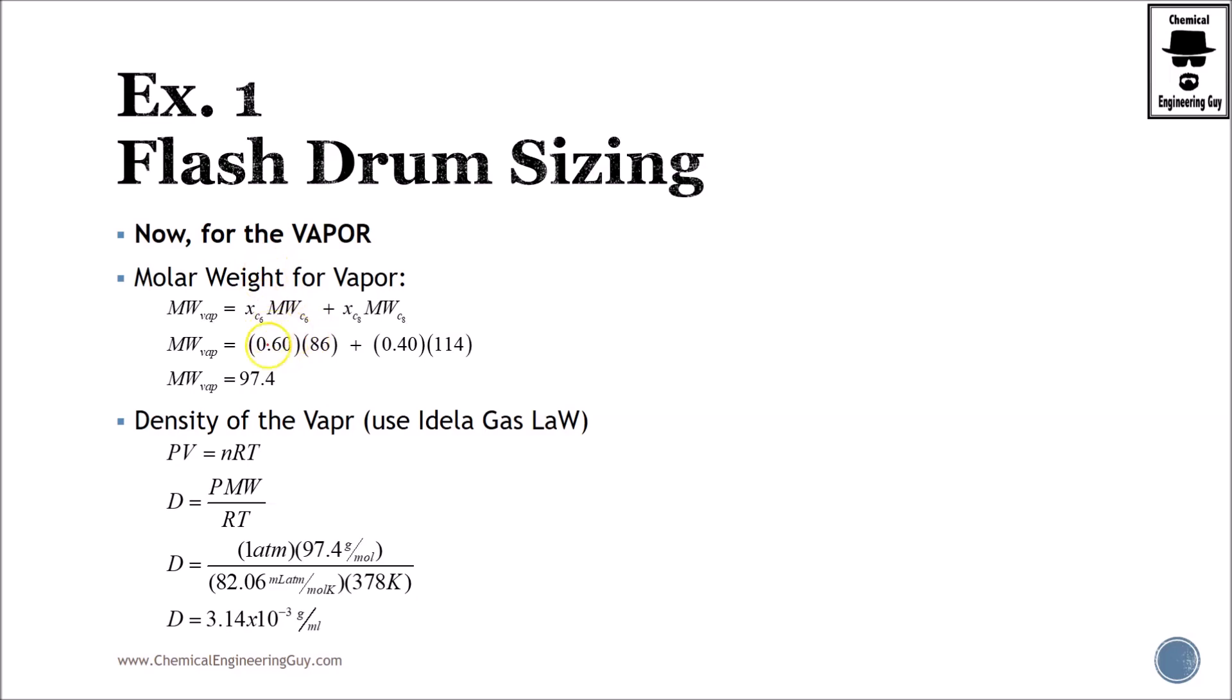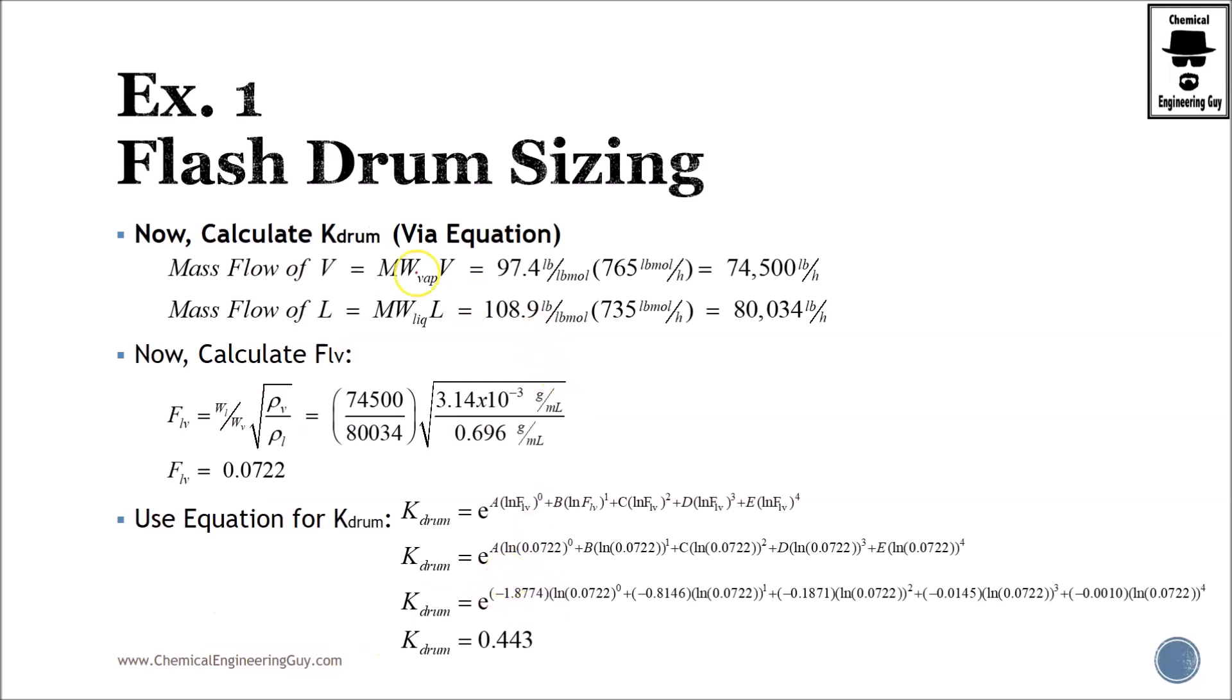We continue with the vapor. We do the same thing for the vapor. Molar weight of the vapor should be different because the composition changed. Now we have richer hexane. And the density of the vapor can be dealt with this: PV equals NRT. Remember that if we get NRT, we got the molar weight, average molar weight. We substitute data and this is the density in grams per milliliters.